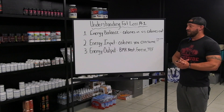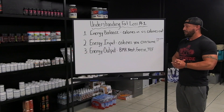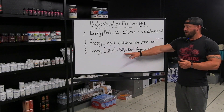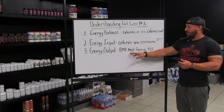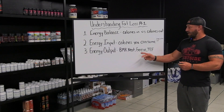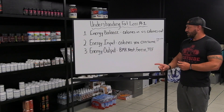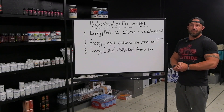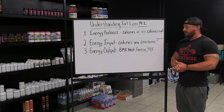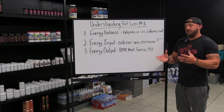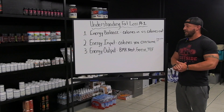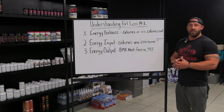Energy output — there are lots of ways to affect it. BMR, which stands for basal metabolic rate; NEAT, non-exercise activity thermogenesis; our exercise; and our TEF, thermic effect of food. In our next video, I'm going to explain what all of these are and how you can manipulate them to make sure we have the right energy out relative to energy going in.